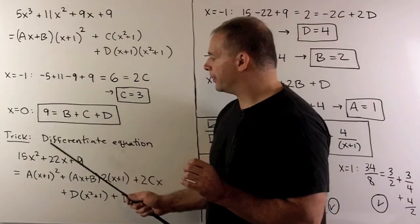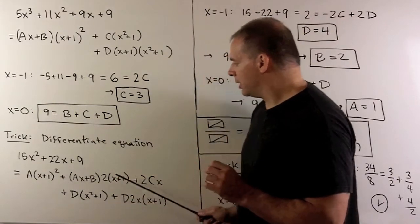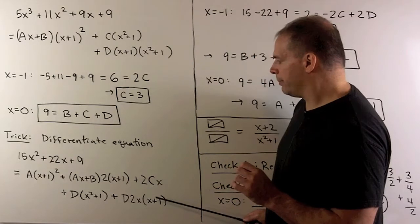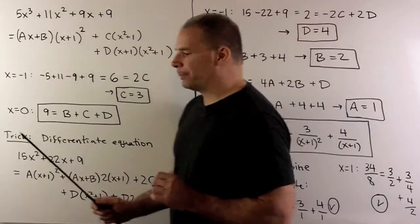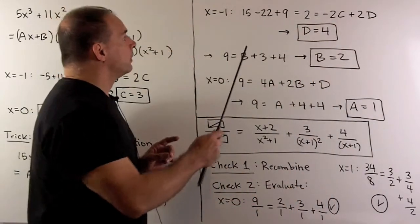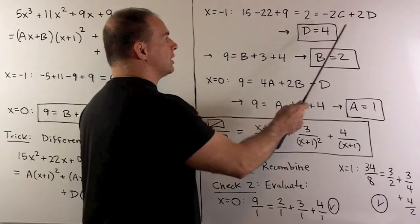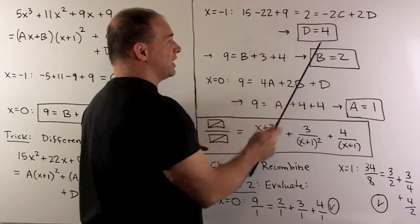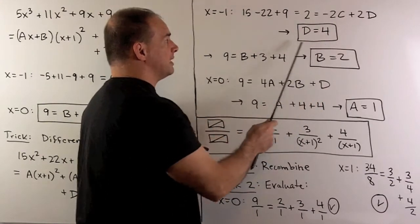I'll try the minus 1. We're going to lose this term, this term, this term. When we put minus 1 in, we're going to have 2 equals minus 2c plus 2d. I know that c is equal to 3, so it's going to give me d equals 4.